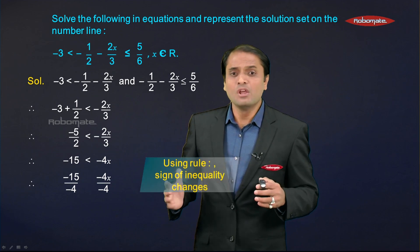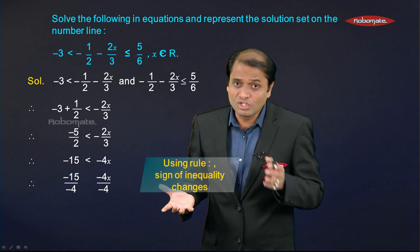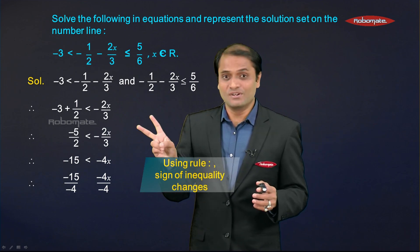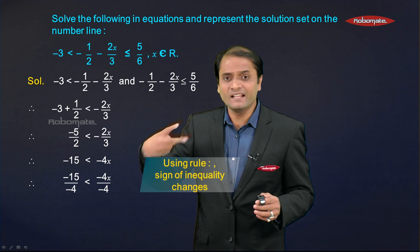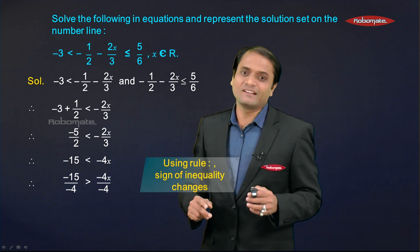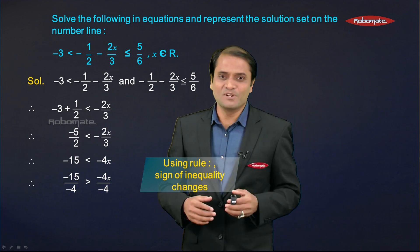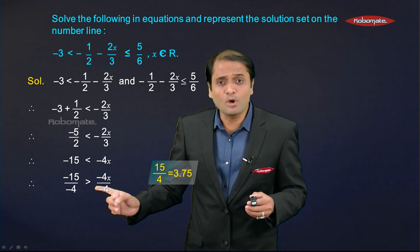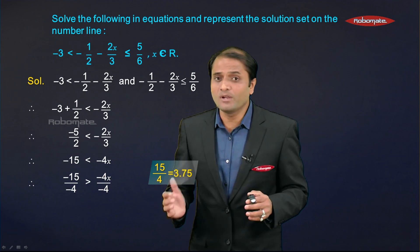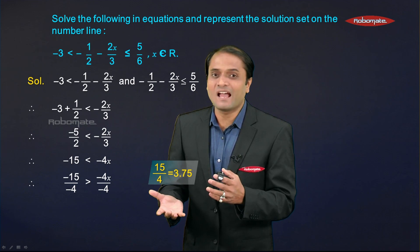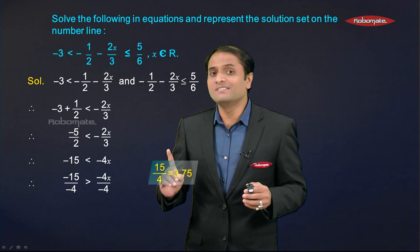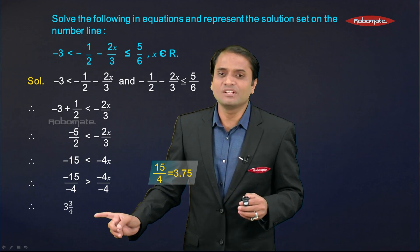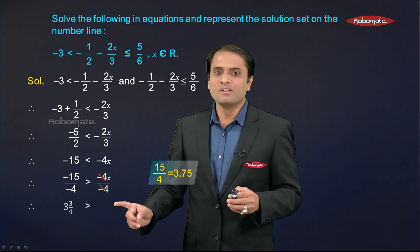Remember one very important rule: whenever you divide both sides of an inequality by a negative number, the inequality sign gets reversed. So the less-than sign becomes a greater-than sign. On the LHS, −15 ÷ −4 gives 15/4. In mixed fraction form, 15/4 = 3¾. So the answer of the first inequation is 3¾ > x.